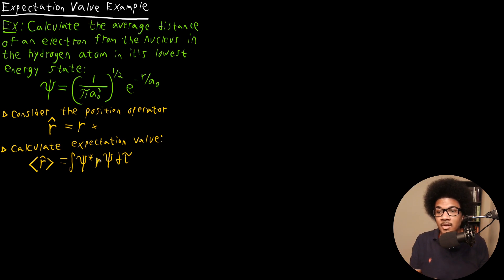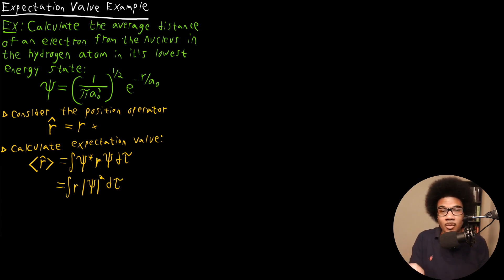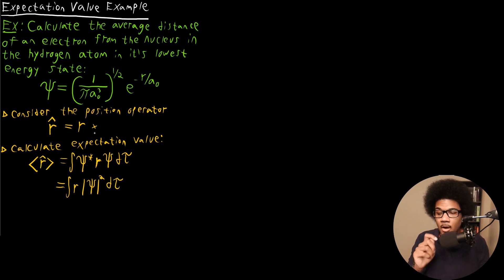The cool thing about this position operator is that since it doesn't have any derivatives, it really doesn't matter where it sits in the integral — you're just multiplying by R. So I can re-express this as R times the square modulus of the wave function, because Psi-star times Psi is just the square modulus, and R can be anywhere in the integrand since we're only multiplying by that variable.